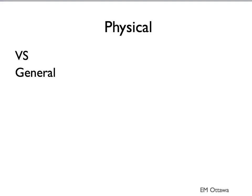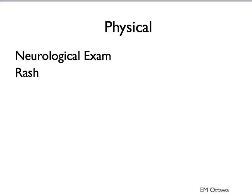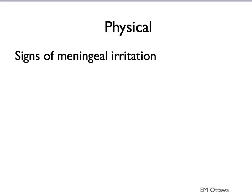On physical examination, we pay special attention to the vital signs. Patients may have fever or signs of sepsis such as tachycardia or hypotension. In general, they may look well, particularly if they are early in their disease, or very unwell if they are late in the course. On neurological examination, we look for focal neurological signs and papilledema. We also look for rashes, particularly purpura.